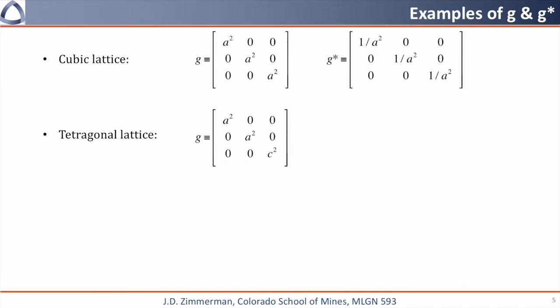In a tetragonal system, G has a squared, a squared, and c squared down the diagonal. G star has 1 over a squared, 1 over a squared, and 1 over c squared down the diagonal.